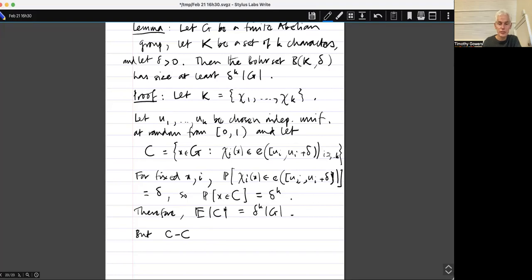But C minus C. So supposing Chi i of X belongs to this arc here and Chi i of Y also belongs to this arc here, then Chi i of X minus Y is going to belong to E of this interval minus this interval. Perhaps I'll say it in slightly more detail. But that will equal the interval minus delta up to delta.